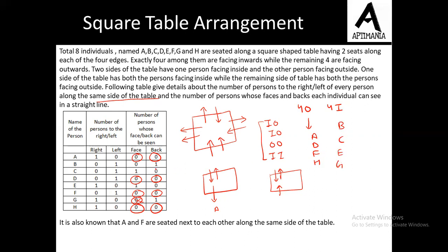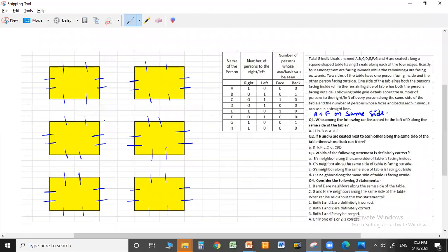It is also known that A and F are seated next to each other. To solve this, I have already prepared multiple cases to save time. Let us start from A, since the A-F information is important. A is facing outside and has one person to his right and none to his left. So we place A, and since A and F are on the same side, F must be next to A.